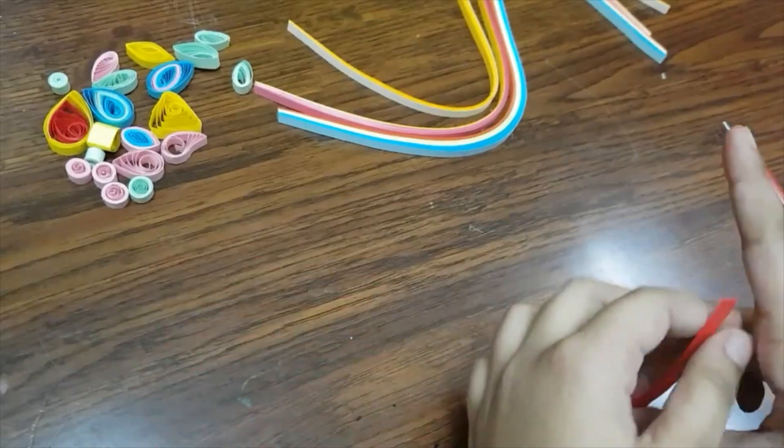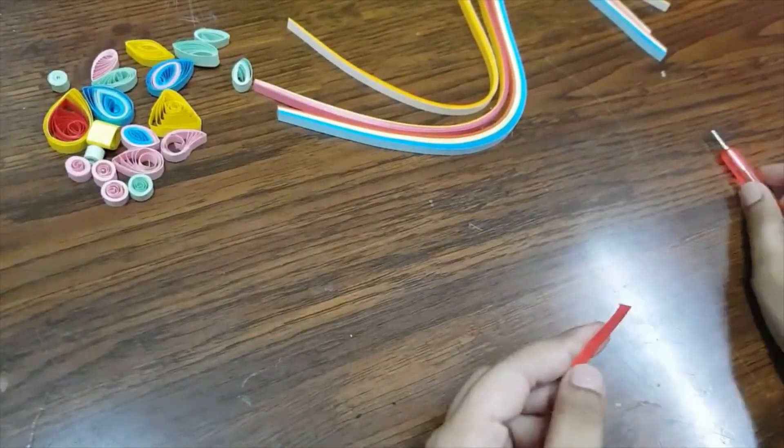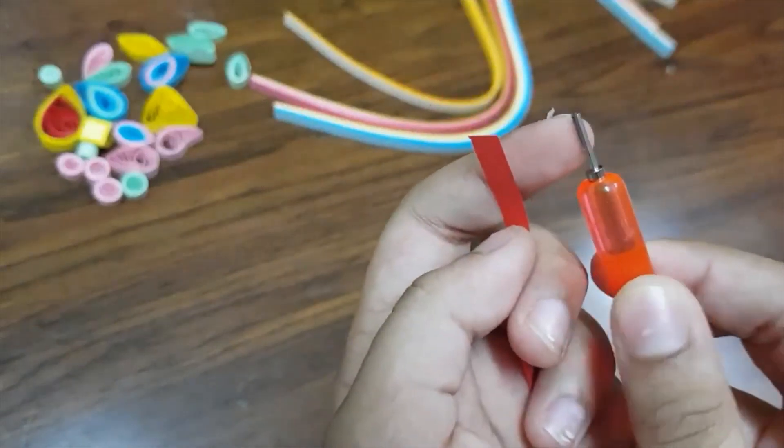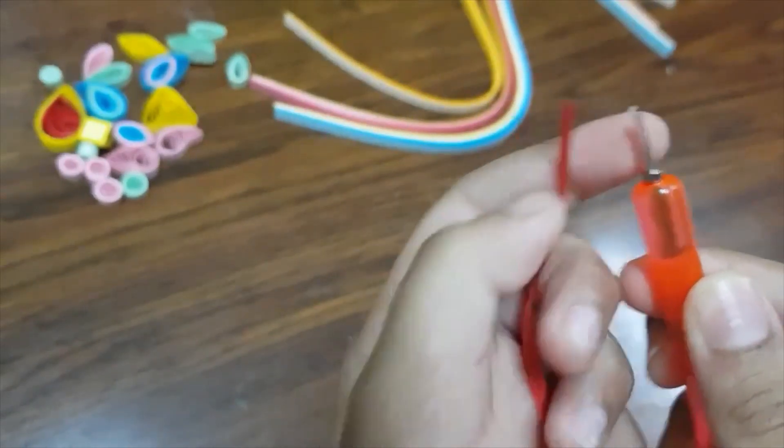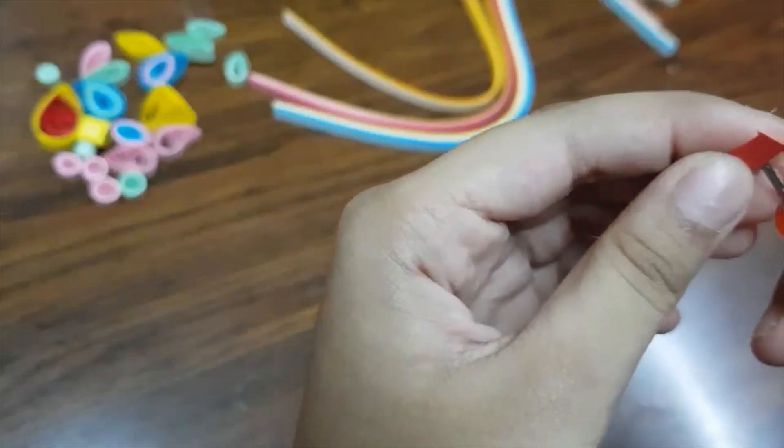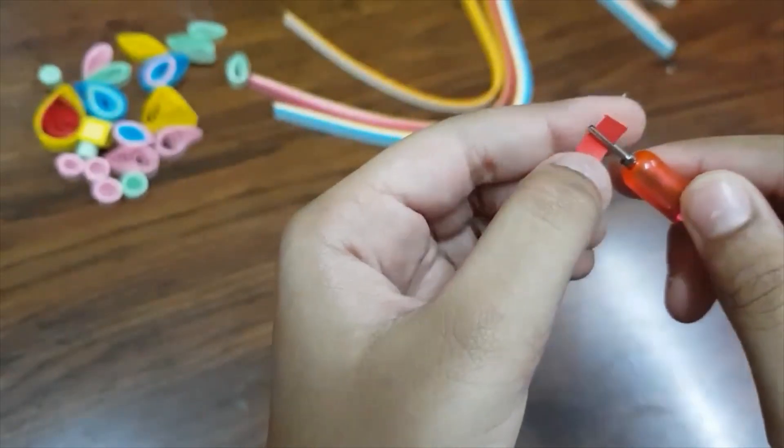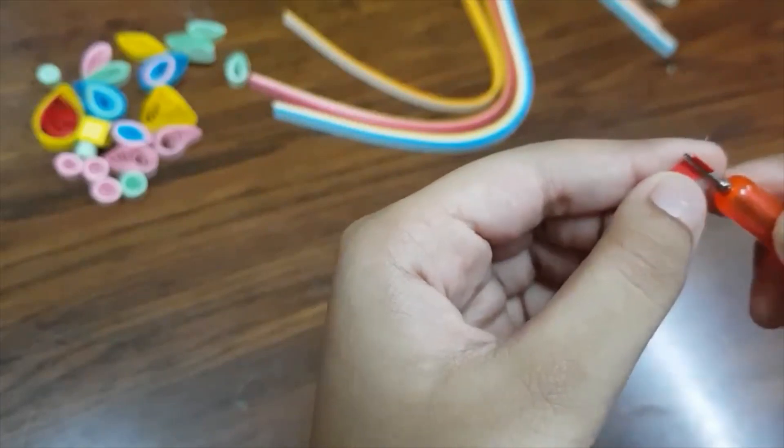So today we're going to be doing such a craft. Here I have now got a piece of paper. Now I'm going to start rolling this. So here in this instrument there's a small hole for inserting your paper right there - insert your paper into that hole.